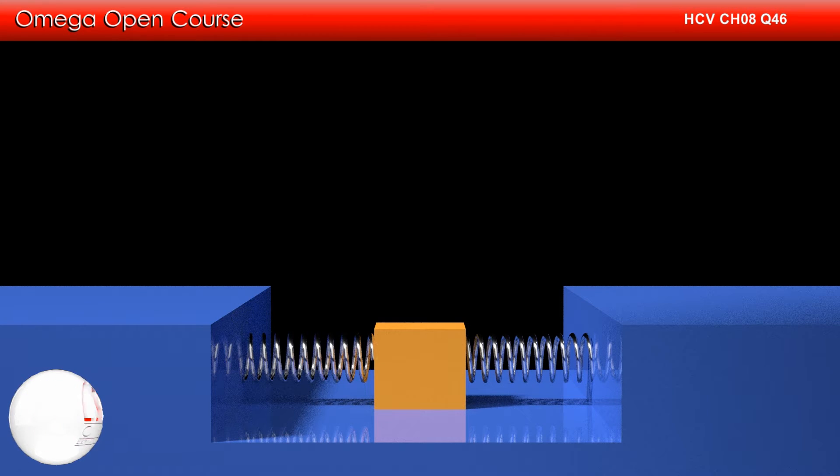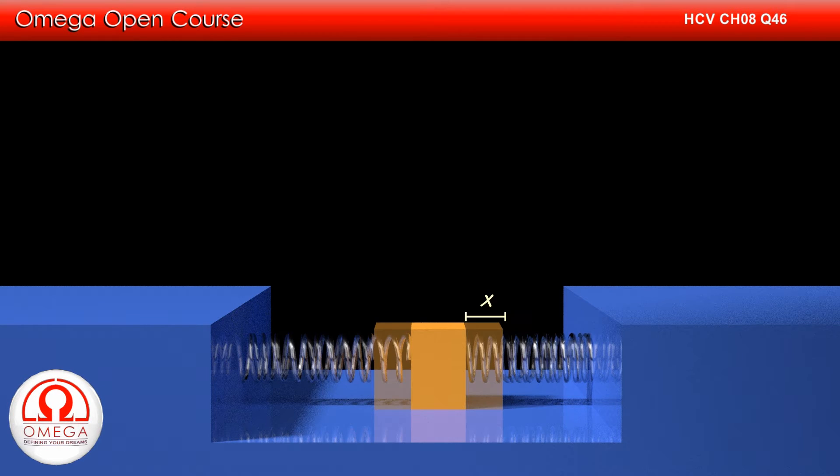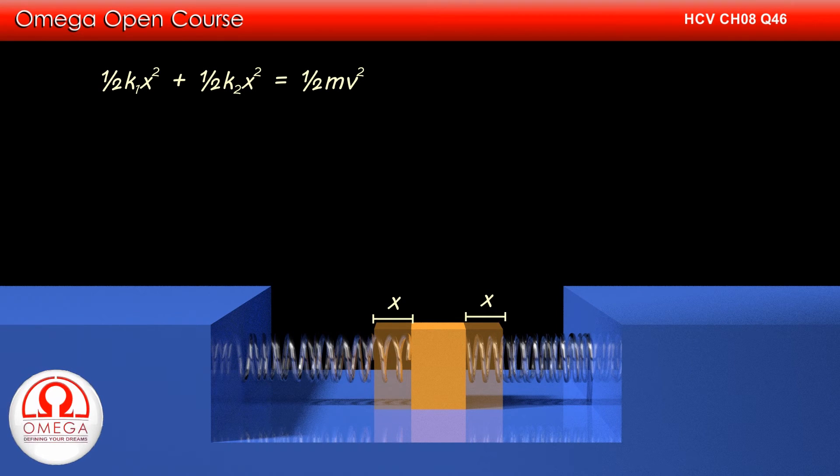When the block is displaced towards right by x, the spring on right side of the block is compressed by x while the spring on the left side is elongated by x. Thus, the spring potential energy of the system is ½K1x² + ½K2x².